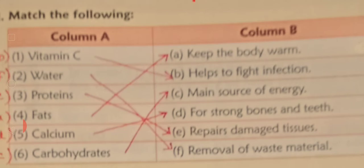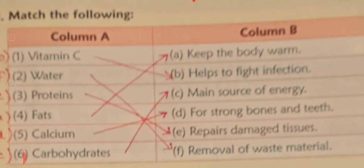In Column B, write against letter a: keeps the body warm — W-A-R-M. Against letter b, second number: helps — H-E-L-P-S.